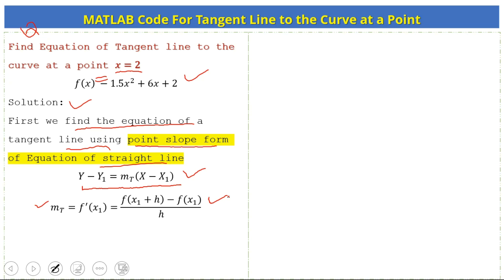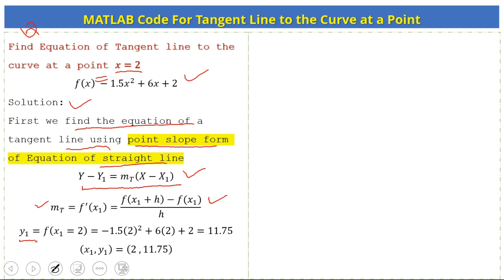First we find the value of y1 by substituting the given value x1 into the function. After simplification we get y1 = 11.75. So the point on which we draw the tangent line is (x1, y1) = (2, 11.75).